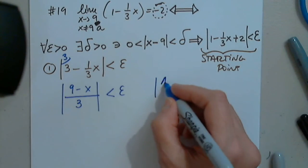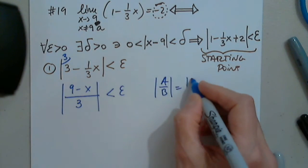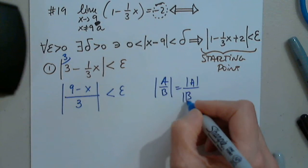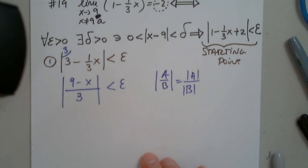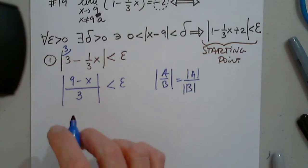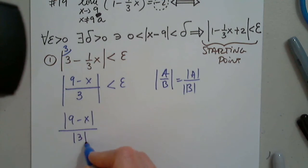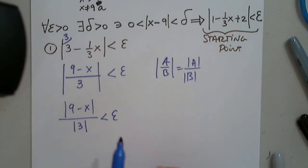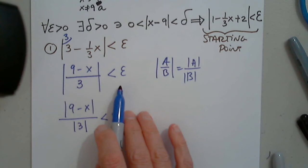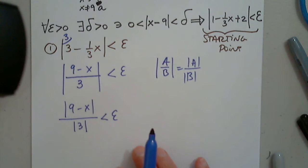Now remember there was a property that we discussed last time: a over b in absolute value equals the absolute value of a over the absolute value of b. So now I have to use that property: the absolute value of nine minus x divided by the absolute value of three less than epsilon. Do not try to multiply by three at this point. You're not allowed to at this point. Do not try, please.